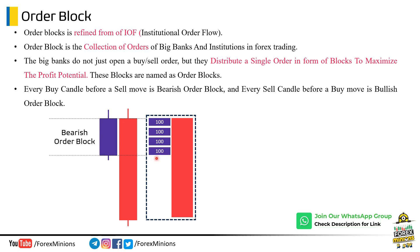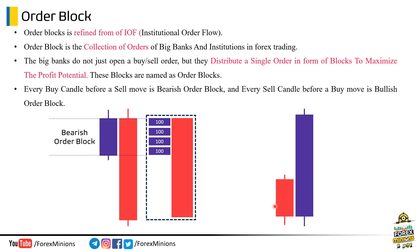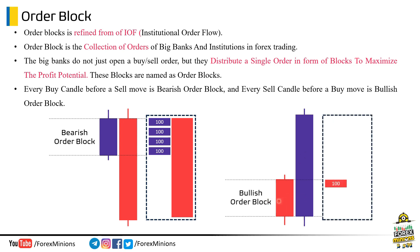When smart money is done distributing their orders, they will move the market into the opposite side at speed — in the form of a large big move. This complete movement — the distribution of orders and the next big sell candle — will act as the bearish order block. This is the hidden logic behind any order block. Similarly, for bullish order blocks: the last sell candle before a buy move is a bullish order block. Big institutions distributed their orders in the form of blocks before this big up move. This is why we mark this bearish candle as a bullish order block.